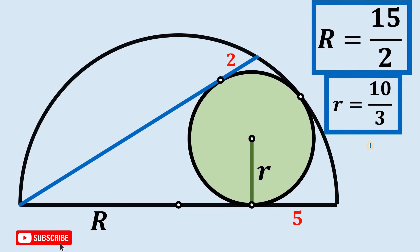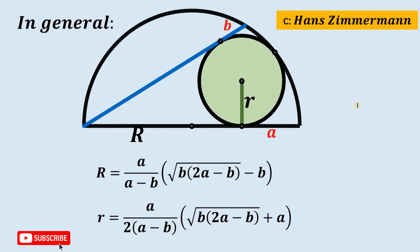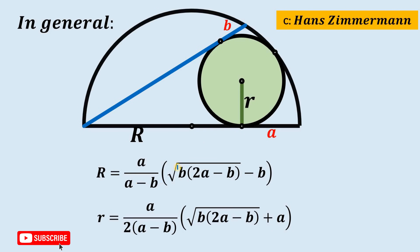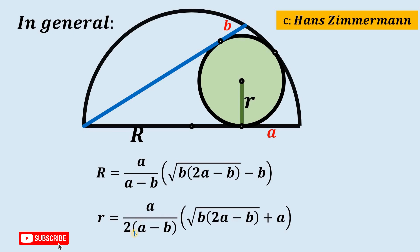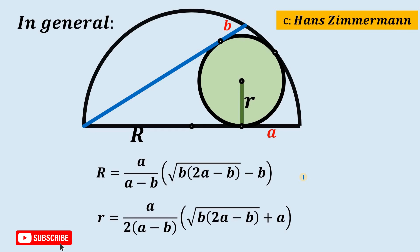Before we end this video, I want to thank Mr. Hans Zimmerman for giving me this question. In general, for this figure, the length of capital R equals a over (a minus b) multiplied by the square root of b times (2a minus b), minus b. And the length of small r equals a over 2 times (a minus b) multiplied by the square root of b times (2a minus b), plus a. To prove this result, you can use the method shown in this video. If you learned something new, please like, share, and subscribe to our YouTube channel.